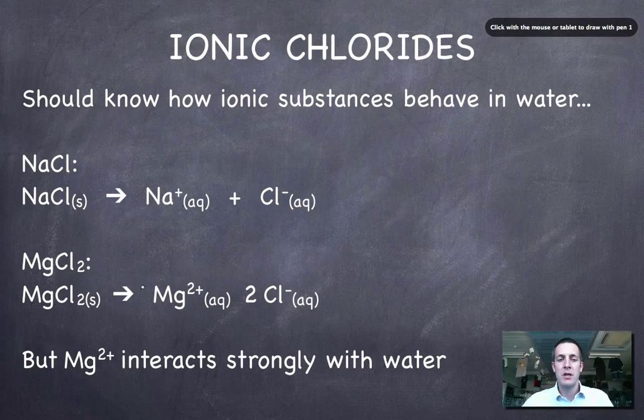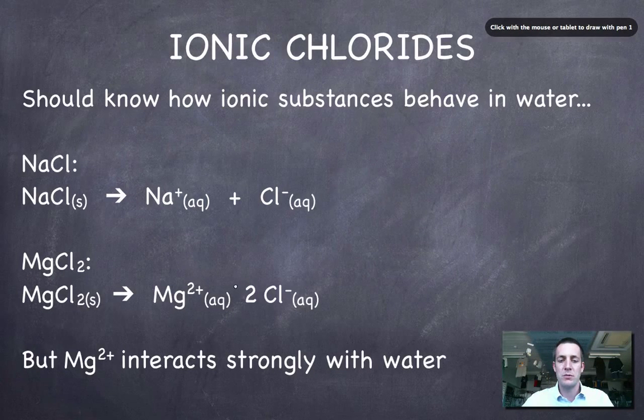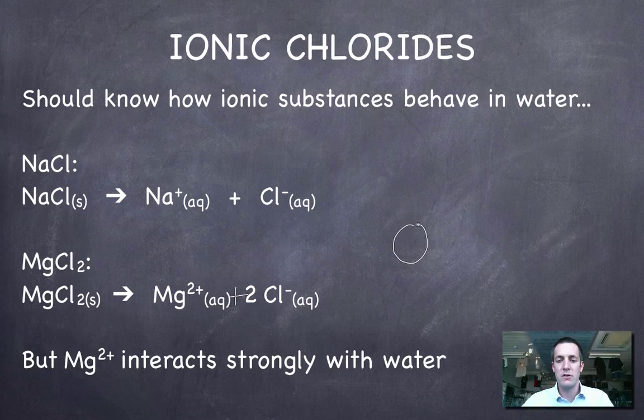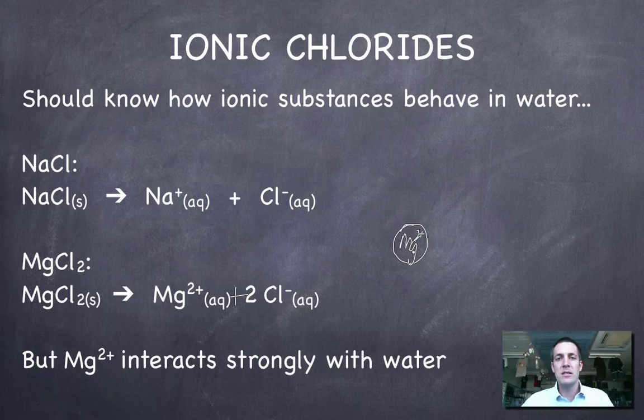This equation here with magnesium chloride is a very similar equation, and we've got magnesium chloride breaking up into its aqueous ions. This solution, on the other hand, is not neutral. In fact, it's slightly acidic, and we need to understand something about the nature of the magnesium ion if we're going to understand why this is so.